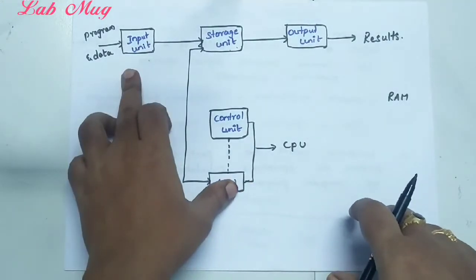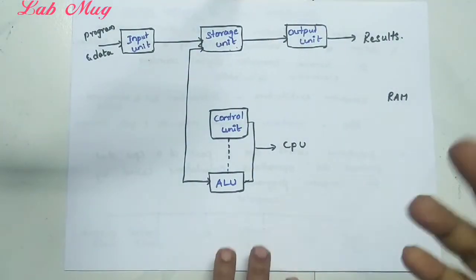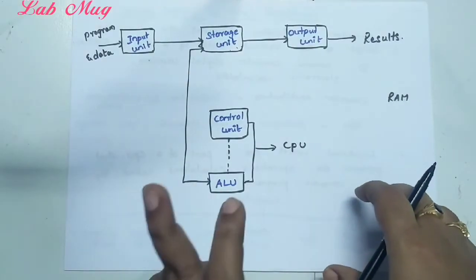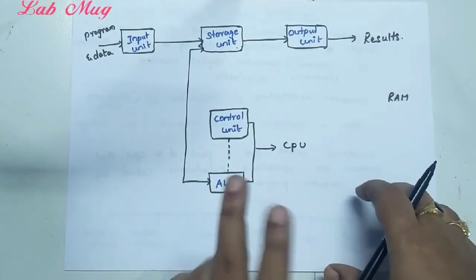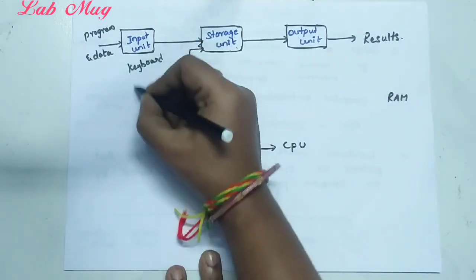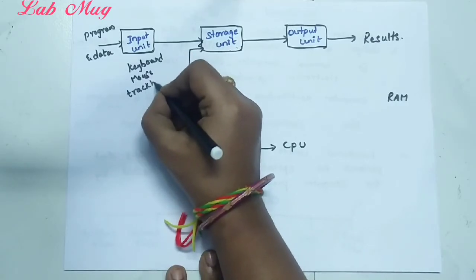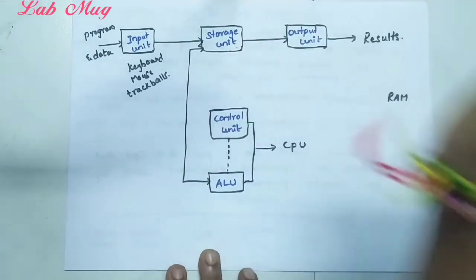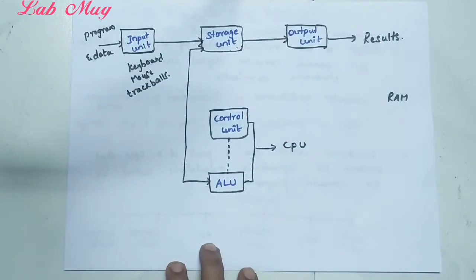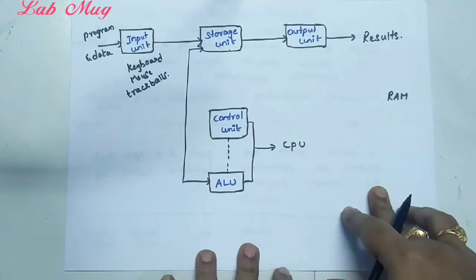What is input unit? The input unit reads the data. Devices are available to read the data. Examples of input units are keyboards, mouse, trackballs, and scanners. Next, the central processing unit — this combination is nothing but the central processing unit.